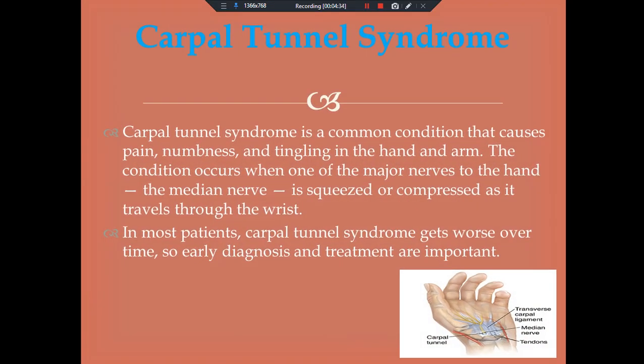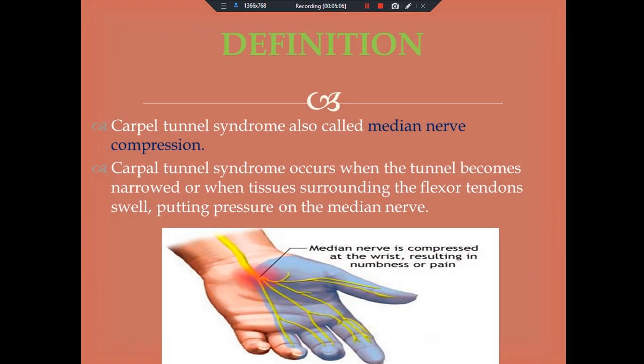Now, carpal tunnel syndrome. Carpal tunnel syndrome is a common condition that causes pain, numbness, and tingling in the hand and arm. The condition occurs when one of the major nerves to the hand — the median nerve — is squeezed or compressed as it travels through the wrist. In most patients, carpal tunnel syndrome gets worse over time, so early diagnosis and treatment are important. Carpal tunnel syndrome is otherwise called median nerve compression. It occurs when the tunnel becomes narrowed or when the tissues surrounding the flexor tendons swell, putting pressure on the median nerve.